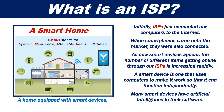Initially, ISPs just connected our computers to the Internet. When smartphones came onto the market, they were also connected. As new smart devices appear, the number of different items getting online through our ISPs is increasing rapidly. A smart device is one that uses computers to make it work, so that it can function independently. Many smart devices have artificial intelligence in their software.